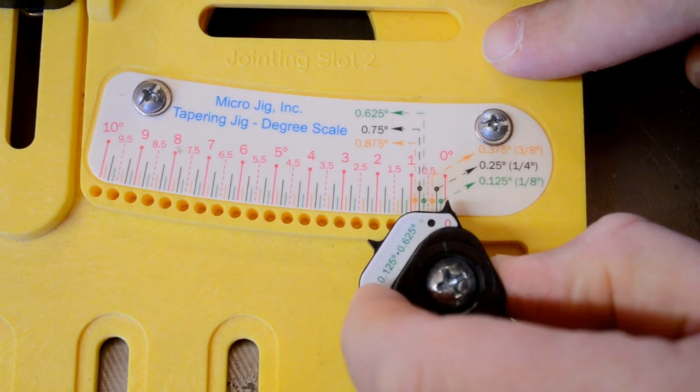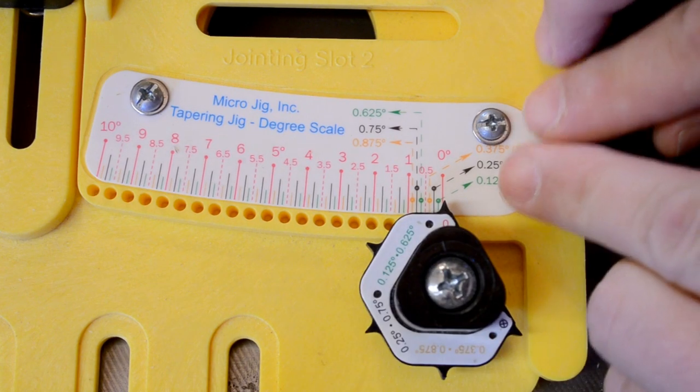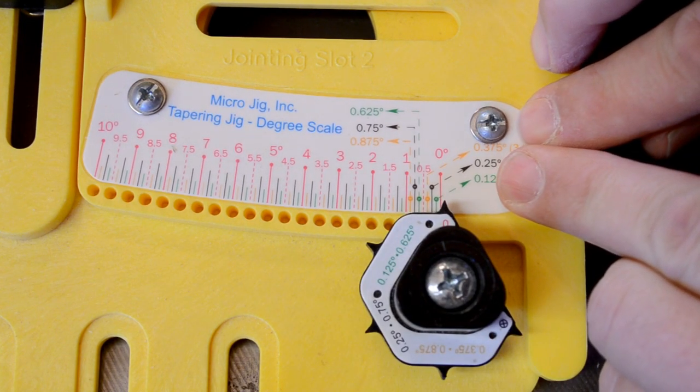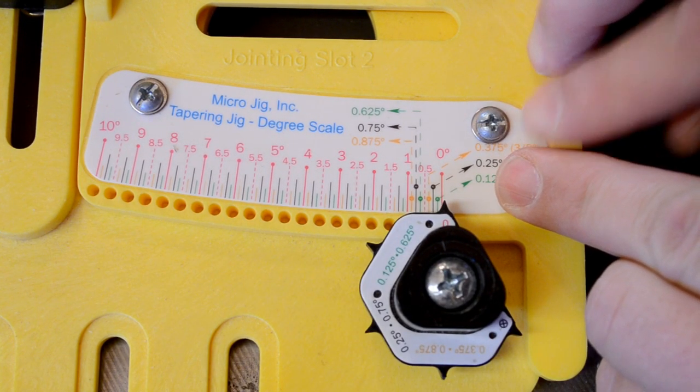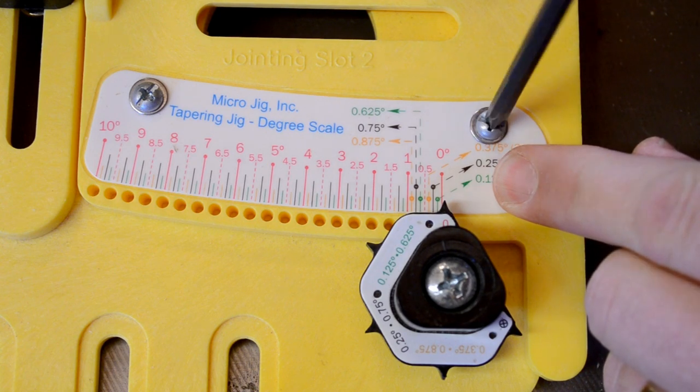Use the zero indicator on the micro-dial to set the first location, or zero, on your scale. Align the scale to the pointer, and then snug up the first screw.